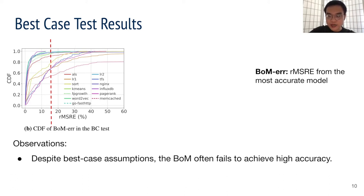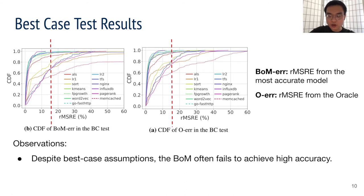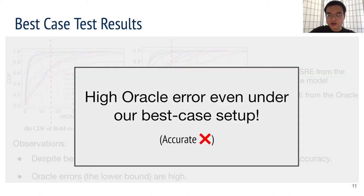Why? If we look at the oracle which produces the lower bound error, its accuracy is equally as bad. In fact, for 5 out of 13 applications, the O error can be higher than 15% for a substantial amount of predictions. This high error suggests that performance prediction can be hard for a non-trivial amount of applications, even with the oracle predictor.